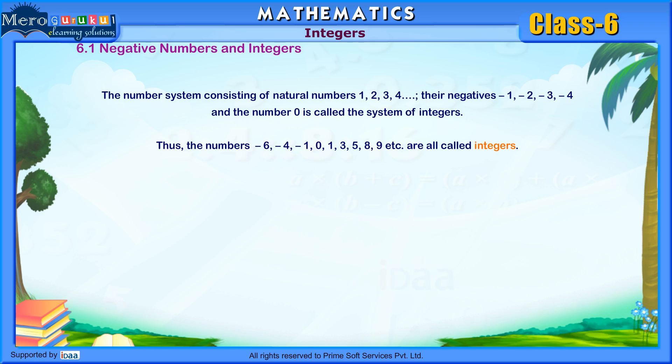Thus, the numbers minus 6, minus 4, minus 1, 0, 1, 3, 5, 8, 9, etc. are all called integers.